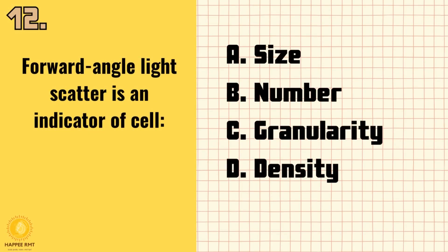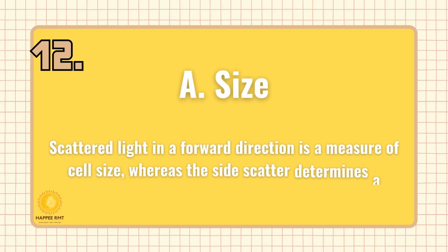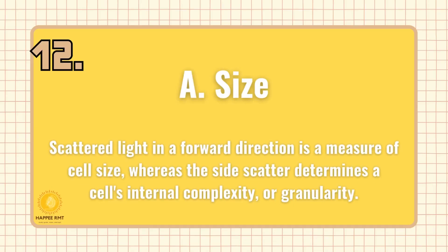Number 12. Forward angle light scatter is an indicator of cell: A. Size. B. Number. C. Granularity. D. Density. Answer is A: Size. Scattered light in a forward direction is a measure of cell size, whereas side scatter determines a cell's internal complexity or granularity.